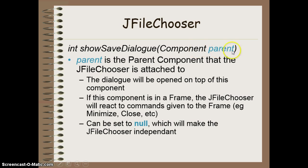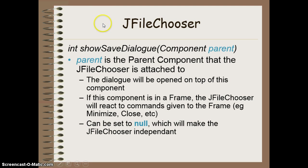The first thing we're going to look at is the argument required for these methods. This argument requires a component to be present, and this is the component that your JFileChooser will be attached to. When your dialog pops up on the screen it will show up over top of whatever component you've put in the arguments. Whatever frame that component is attached to, when you interact with that frame it will cause those interactions to occur to the JFileChooser as well — so if you minimize that frame the FileChooser will minimize with it. If you want your FileChooser to be independent of your overall program, you can put null inside the brackets and then the FileChooser will still stay up on the screen even if you minimize or close your program.